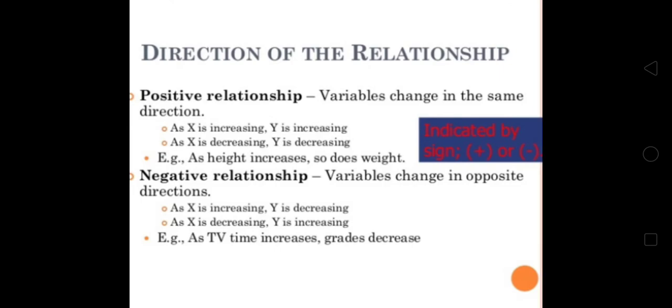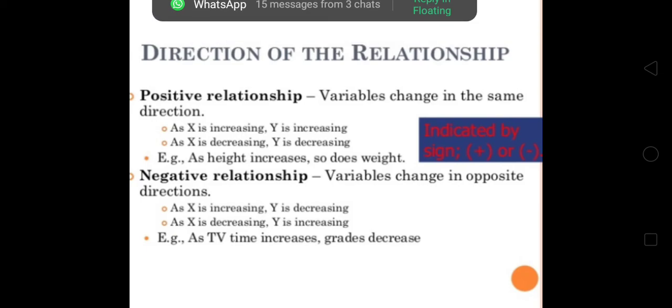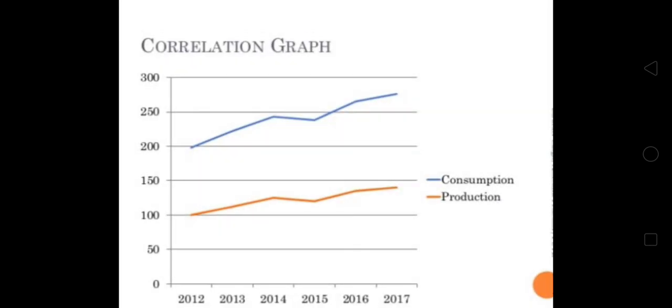The relationship between variables in the same direction, you can call positive. When they are moving towards negative, one is increasing, second is decreasing. Correlation graph is the presentation of that, but we have not to discuss.